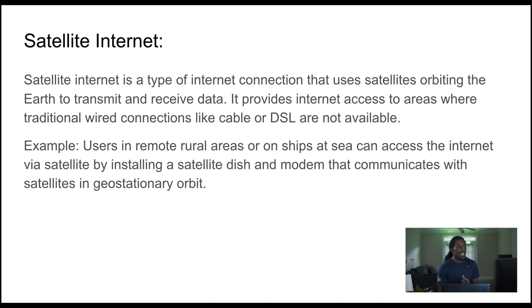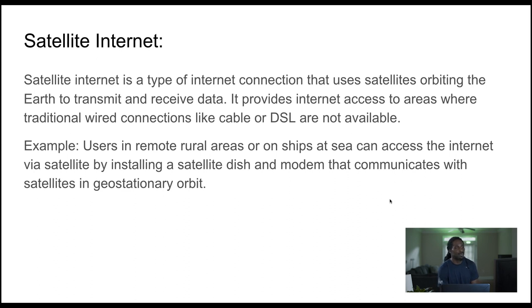Satellite internet is a type of internet connection that uses satellites orbiting the earth to transmit and receive data. People used to have these huge satellite dishes out in front of their houses, and year after year they got smaller and smaller until they were deprecated. It provides internet access to areas where traditional wired connections like cable or DSL are not available — so if you're in a rural area, you might want to get a satellite internet connection. Users in remote areas, rural locations, or on ships at sea can access the internet by installing a satellite dish and modem that communicates with satellites in geostationary orbit.